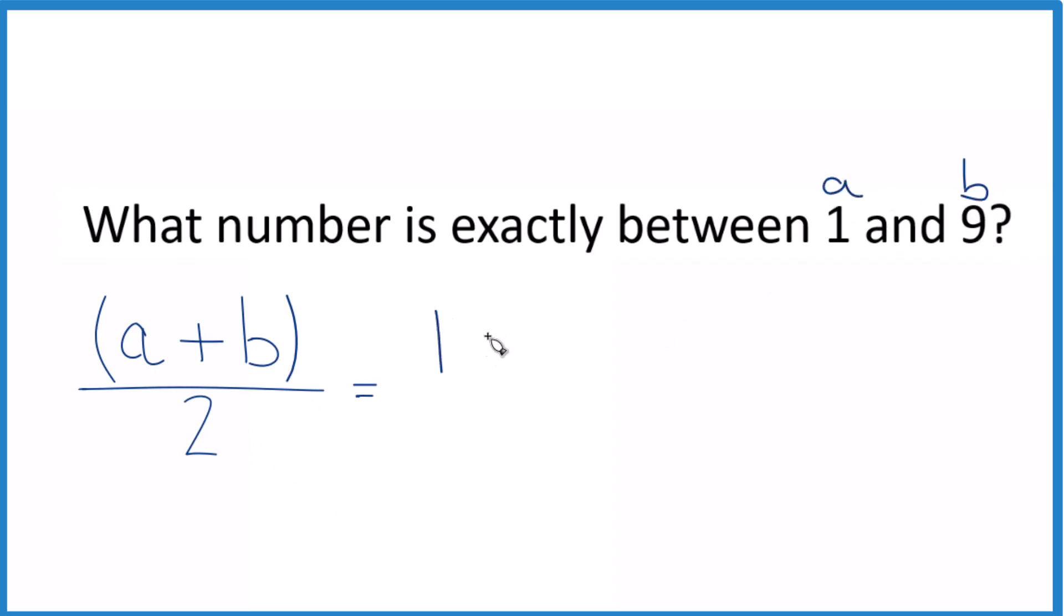So one plus nine, and we divide it by two. And so we have one plus nine is ten. And then we just bring the two across. So we end up with the number between one and nine. Exactly between one and nine is ten over two.